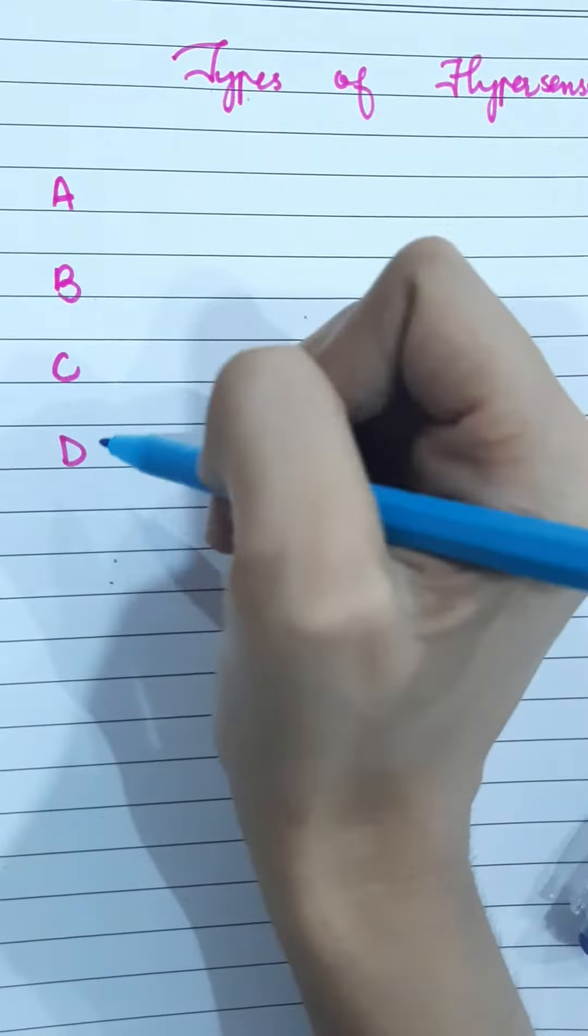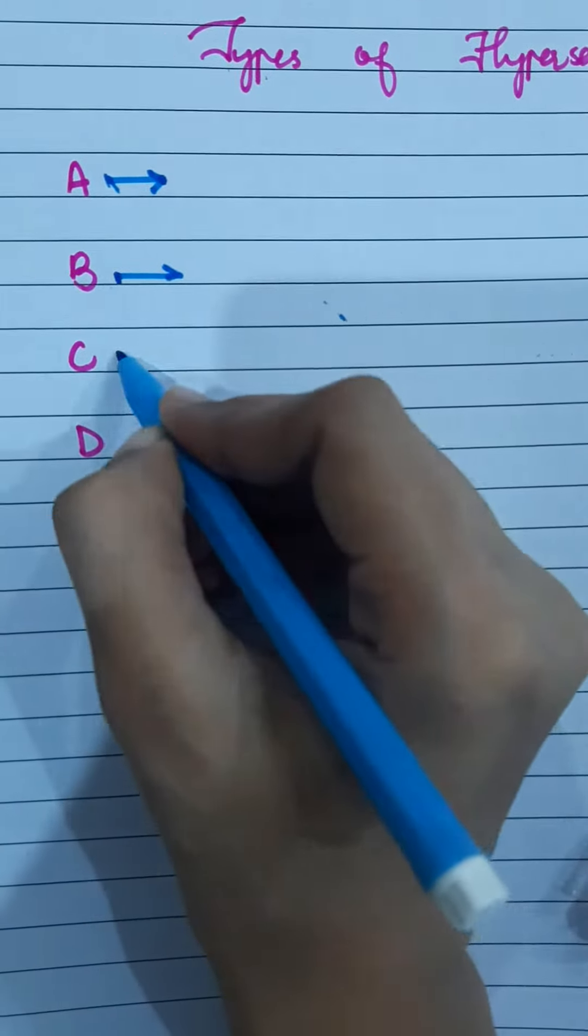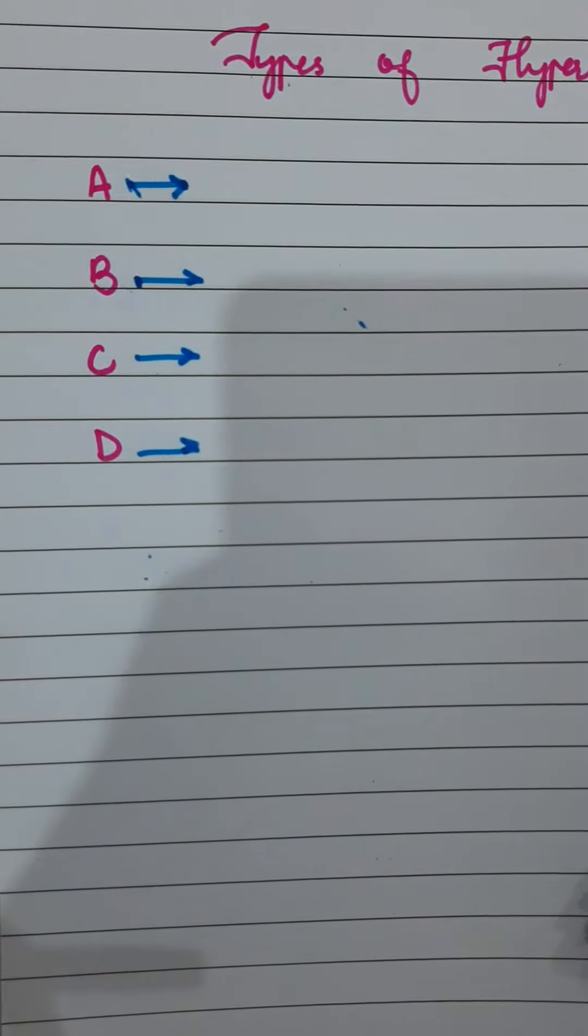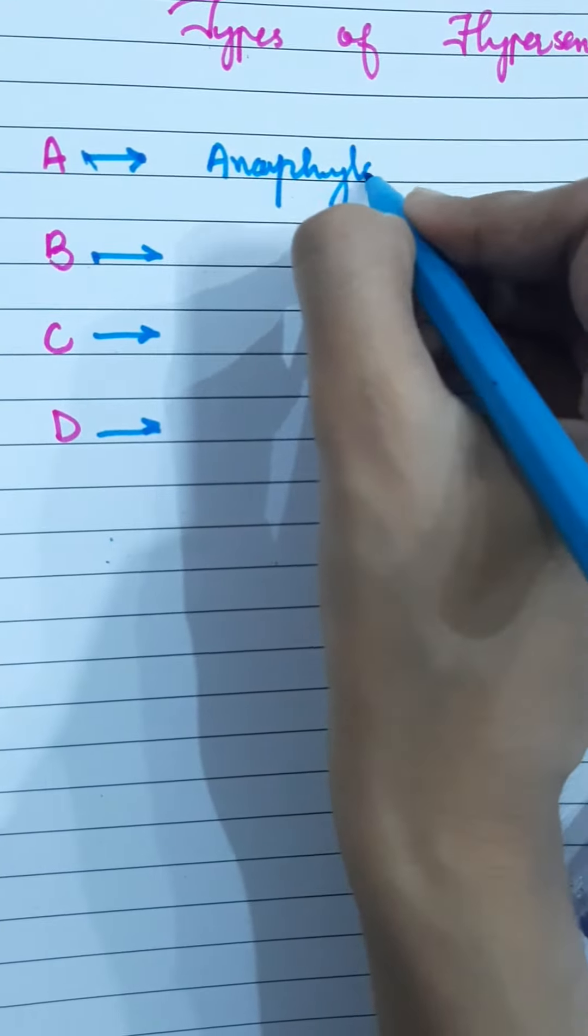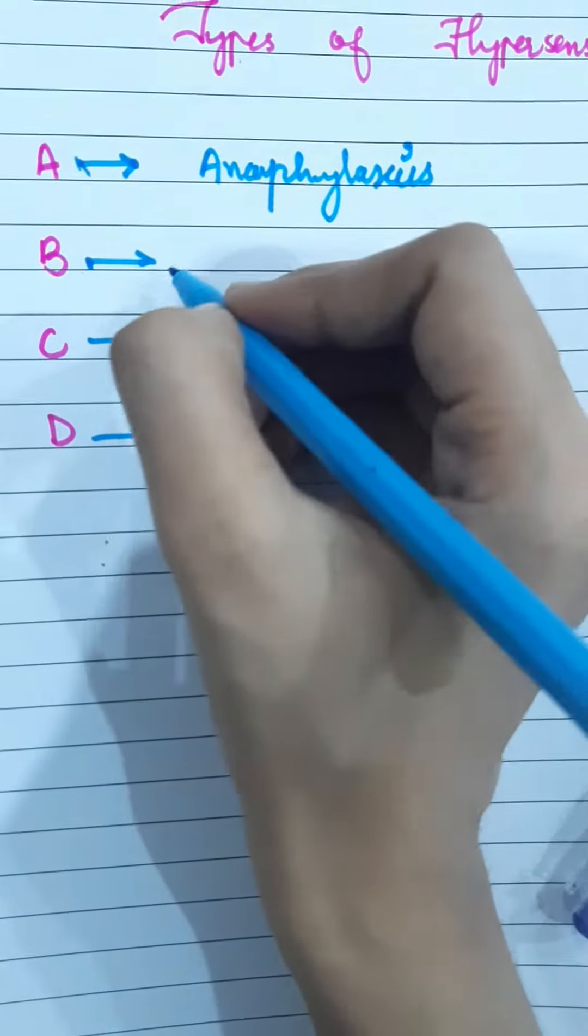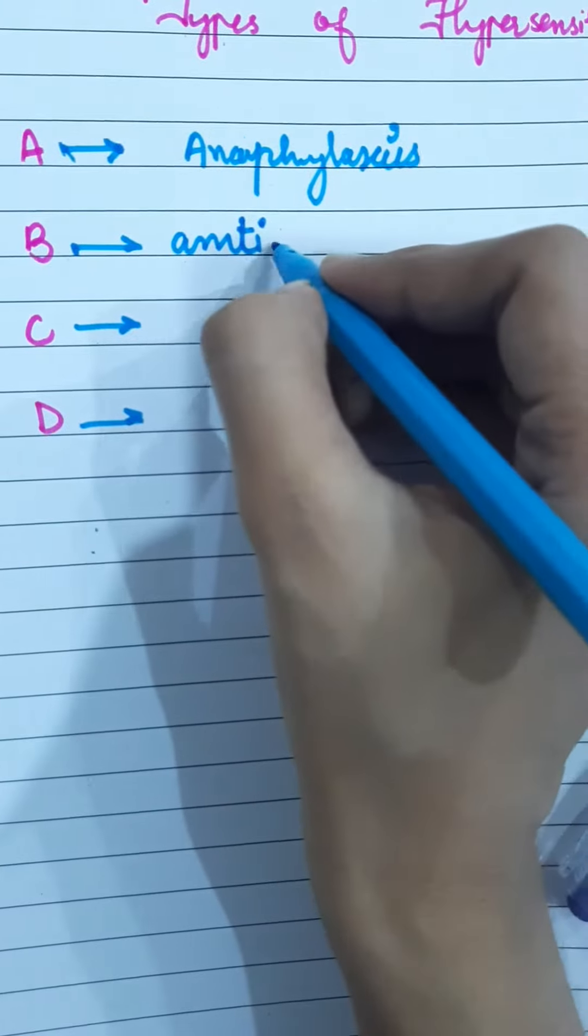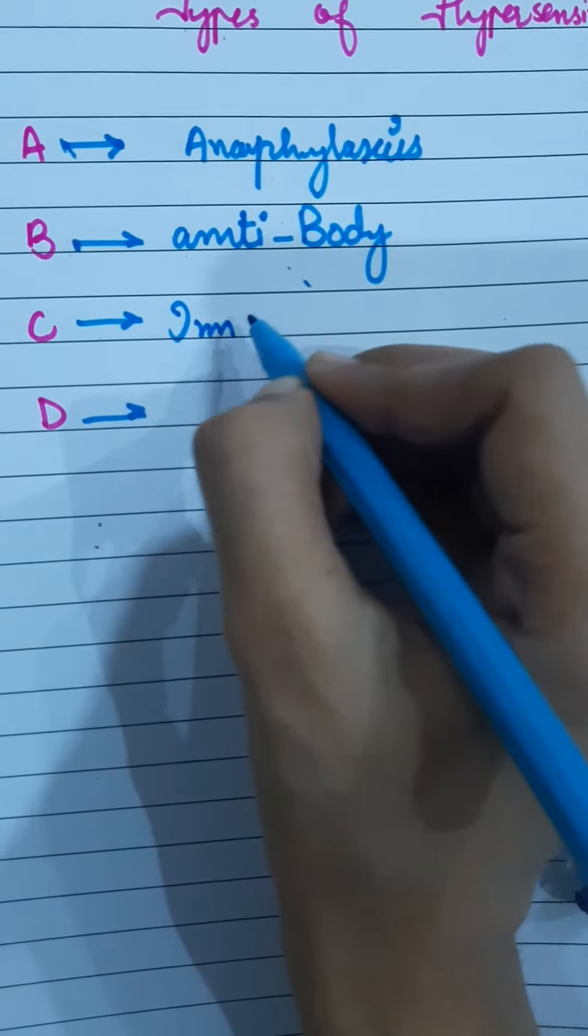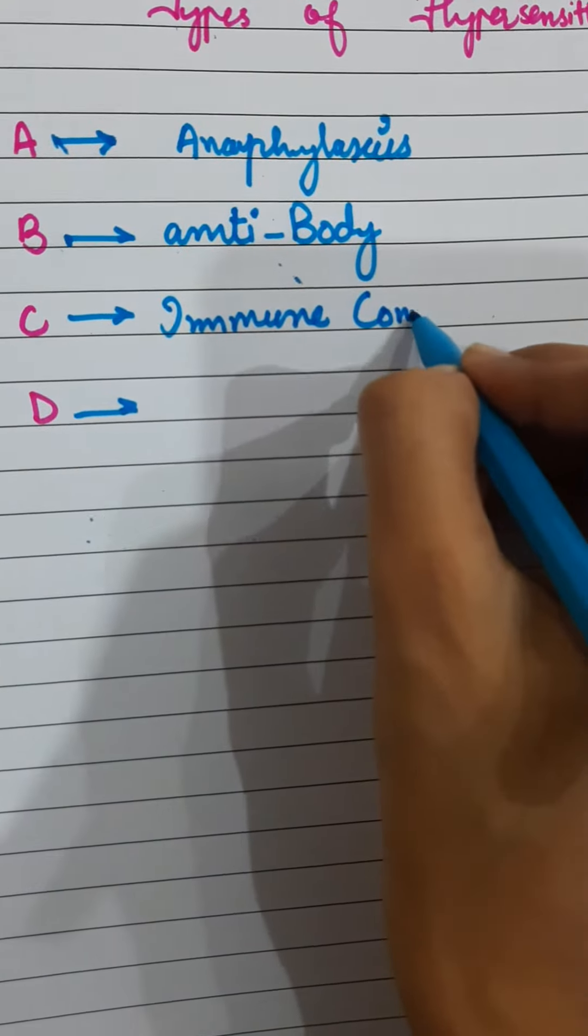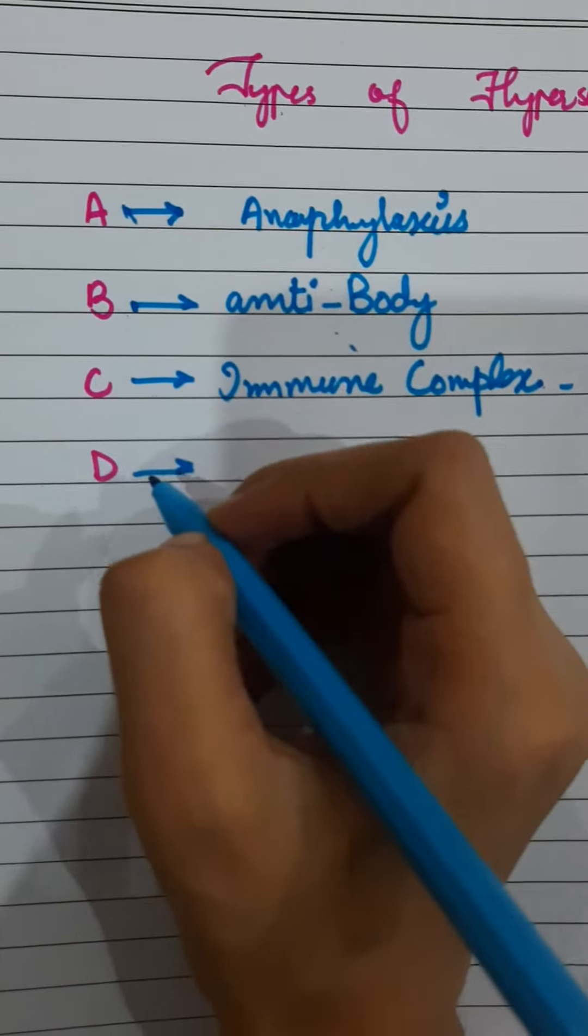The mnemonic to remember the different four types of hypersensitivity reaction is ABCD. A shows anaphylaxis, B shows the antibody, C is used for the complex which is used for immune complex mediator, and D is used for the delayed.